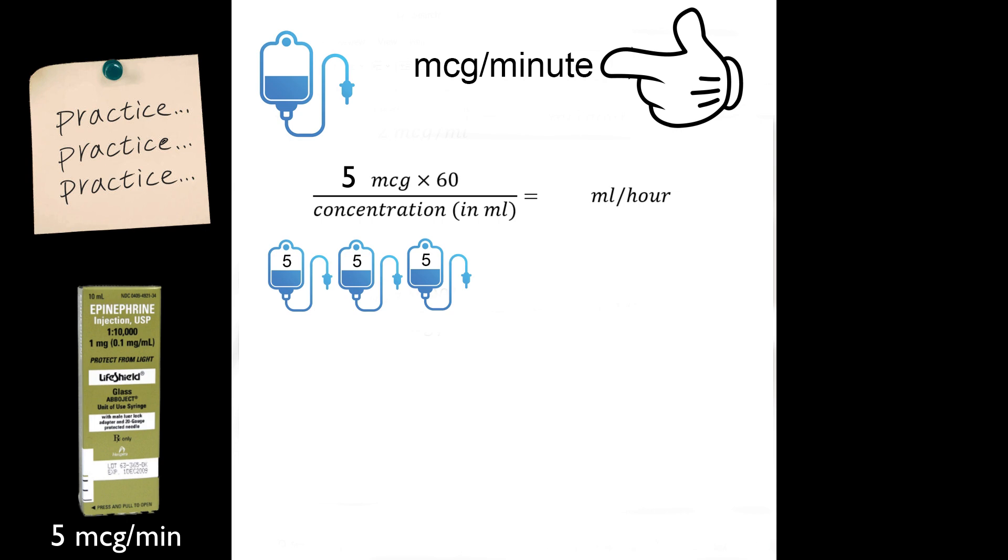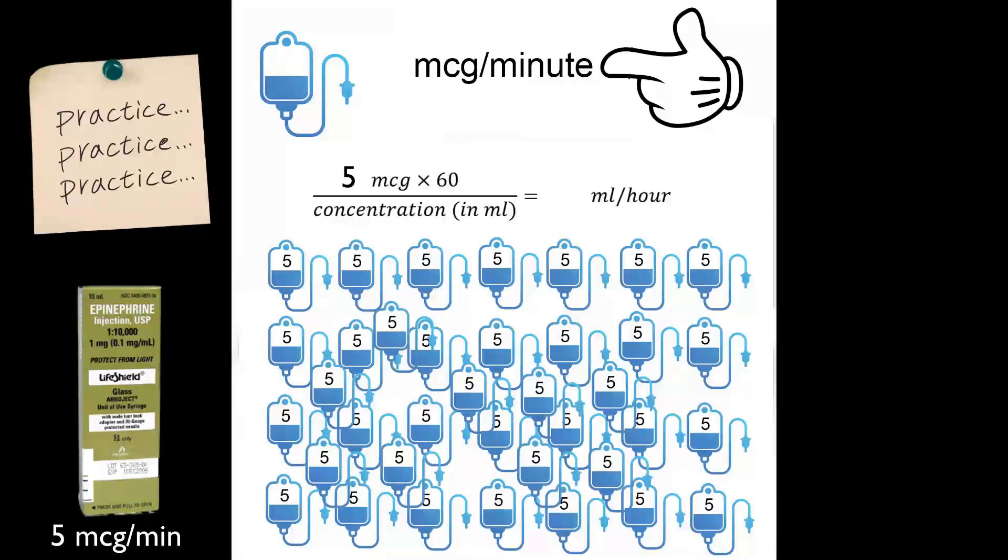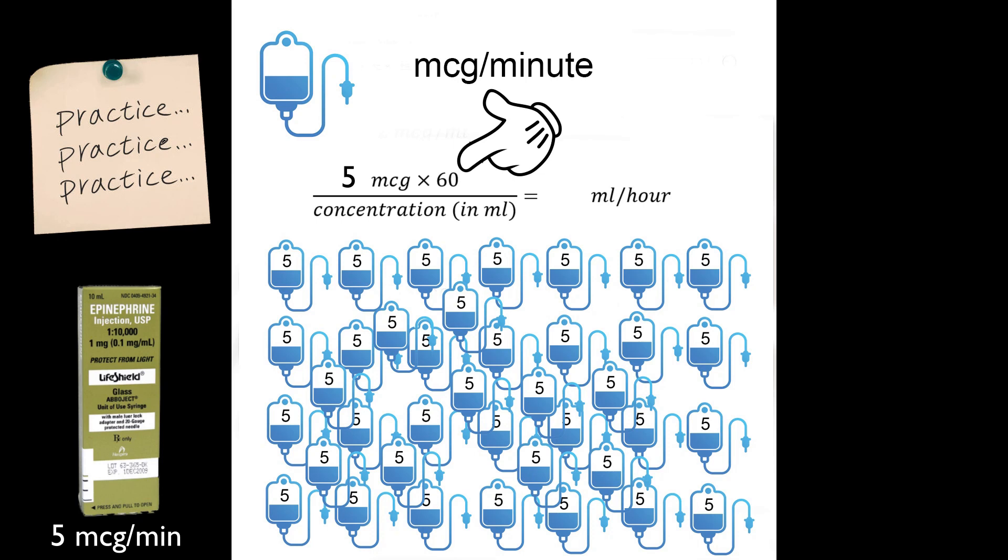And another minute we give another 5 mics. Every minute that goes by is another 5 mic dose, and that keeps happening every minute for a full hour, and we wind up with 60 of these little 5 mic doses. And that's how we wind up multiplying by 60. The 5 mic dose times 60 adds to everything we're going to give over that hour.